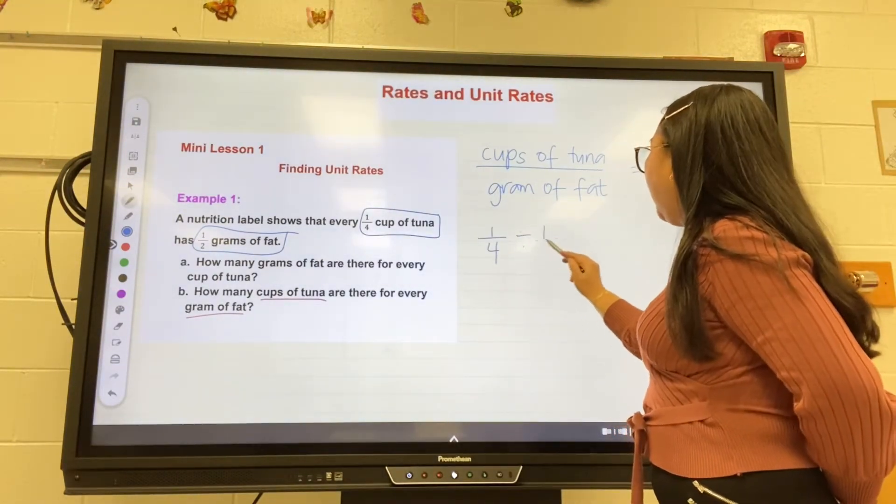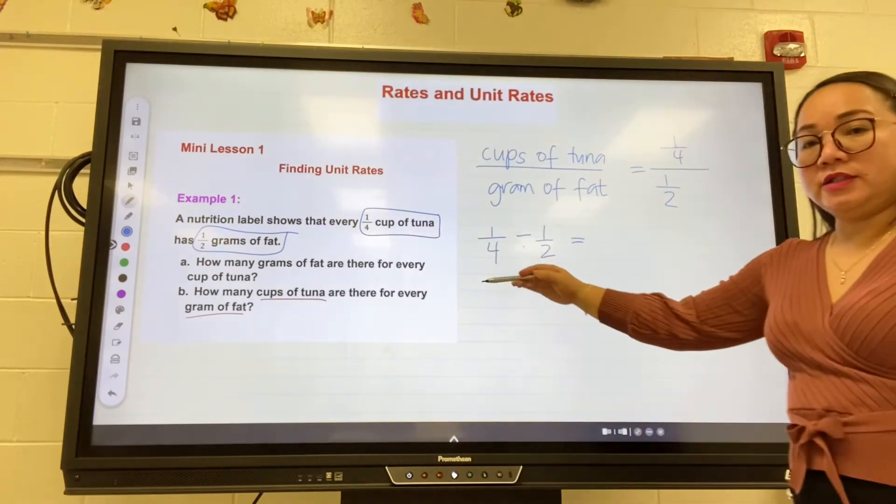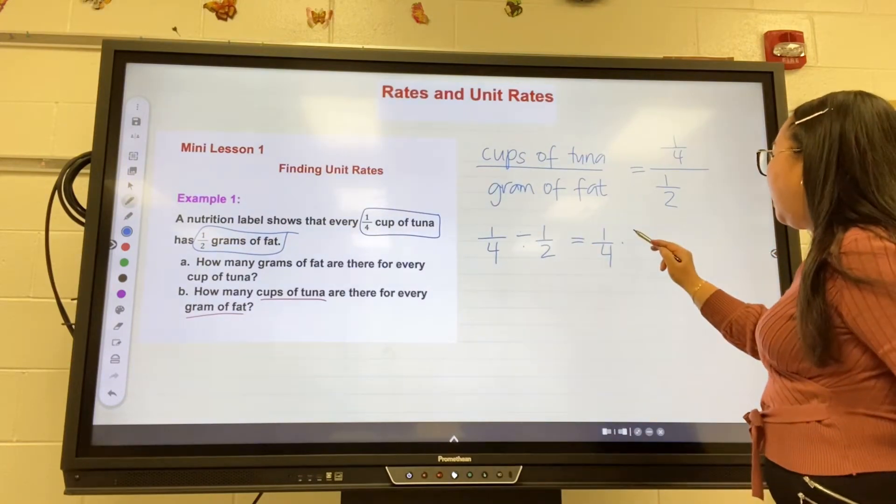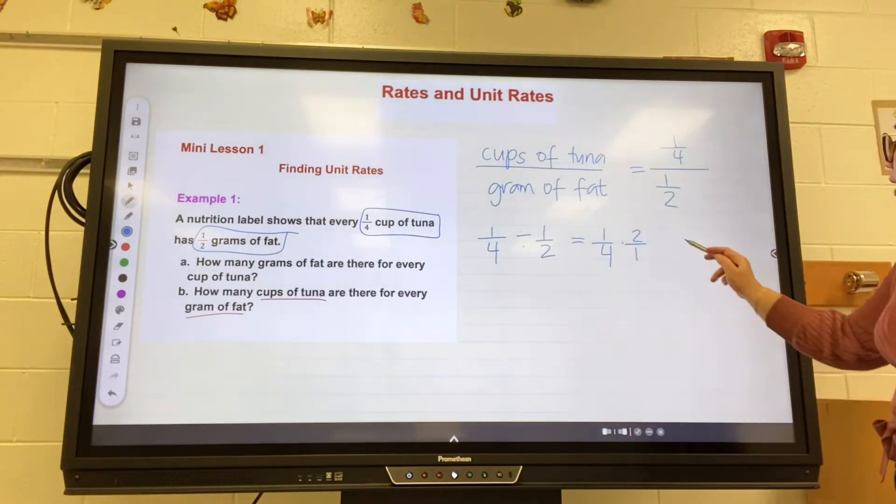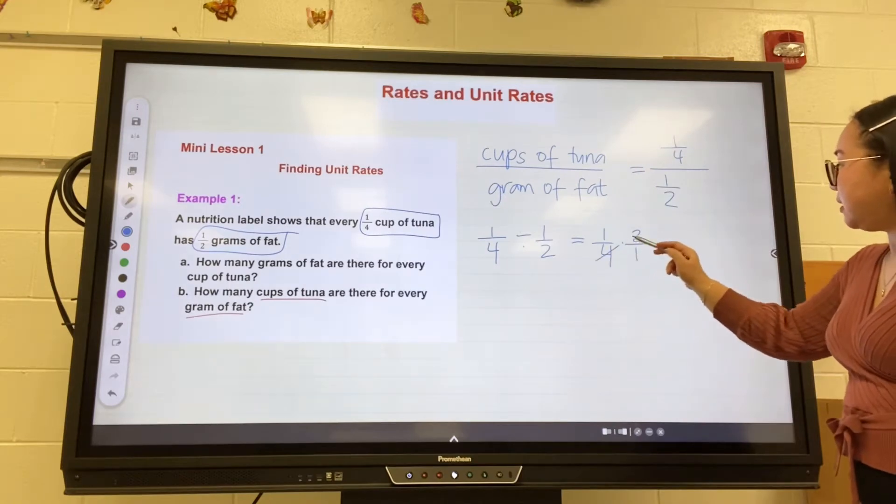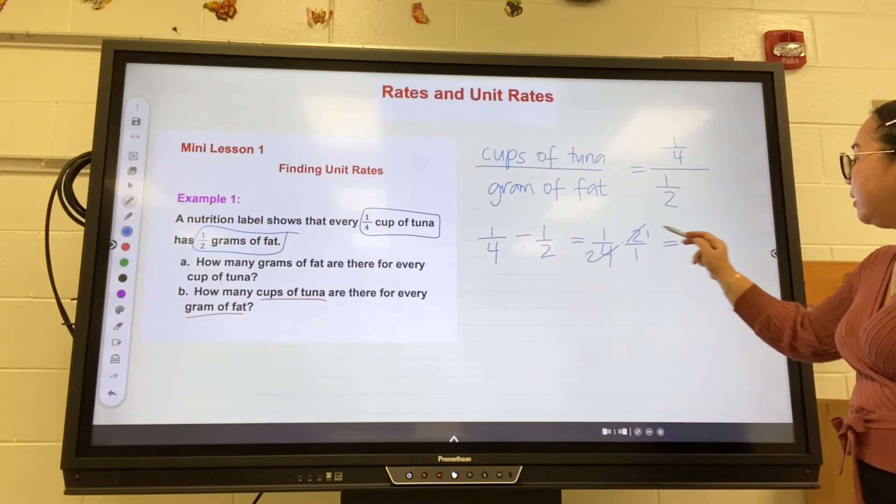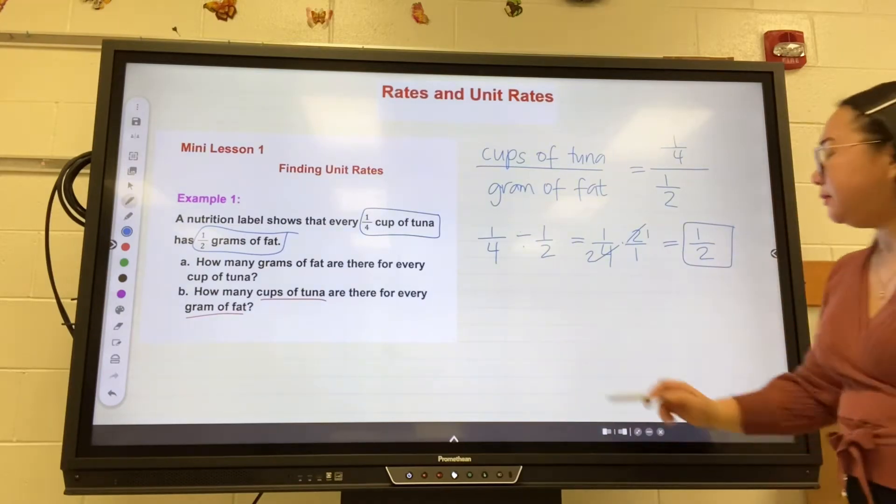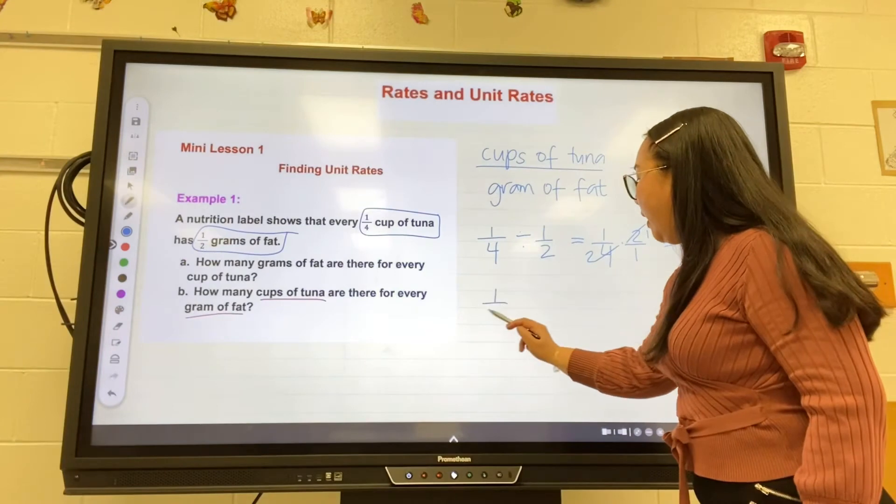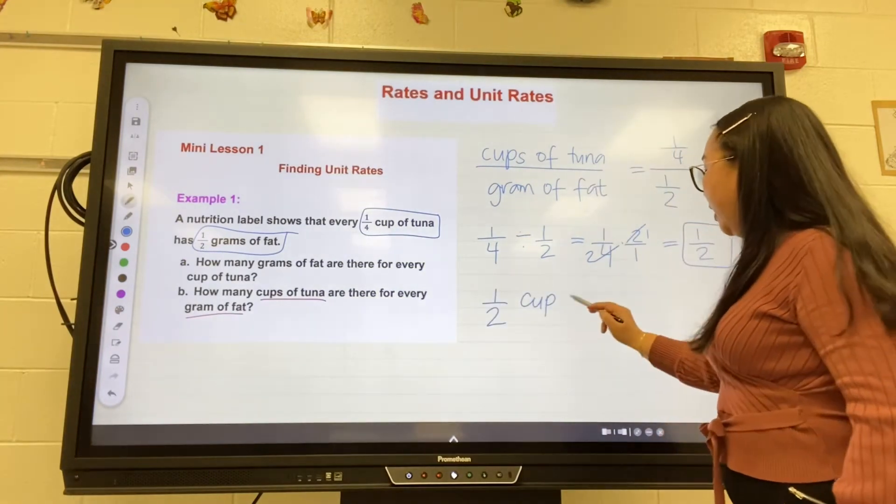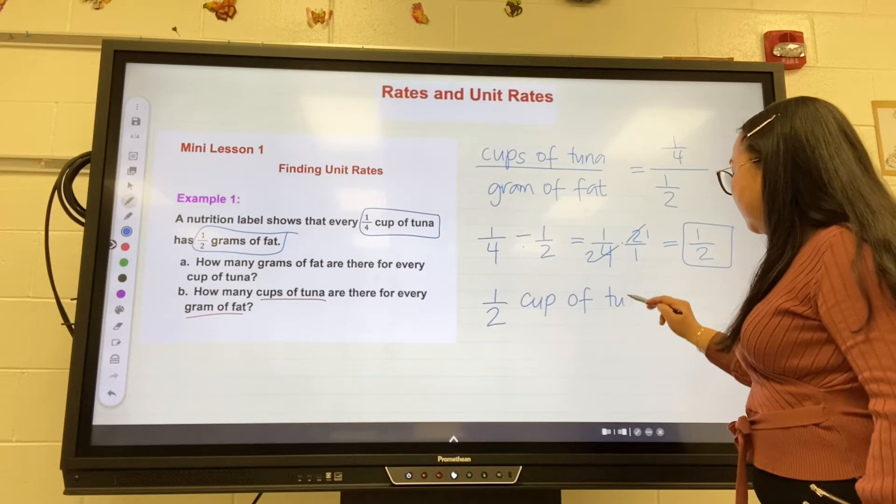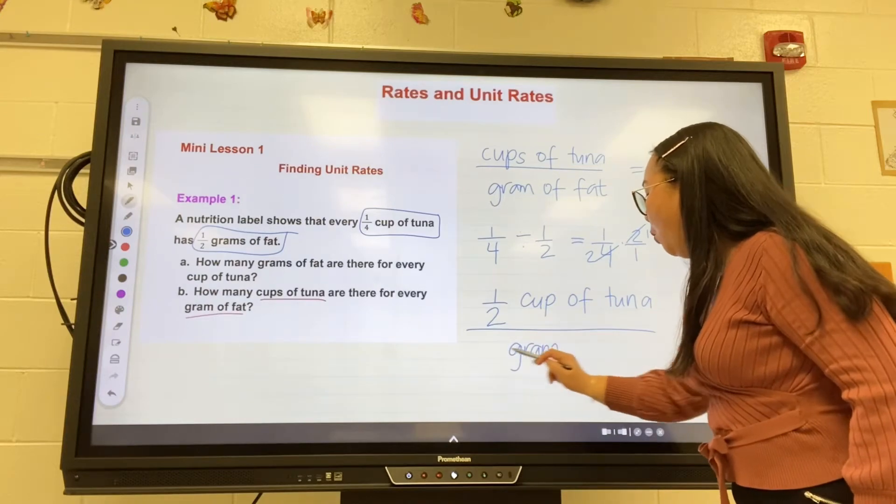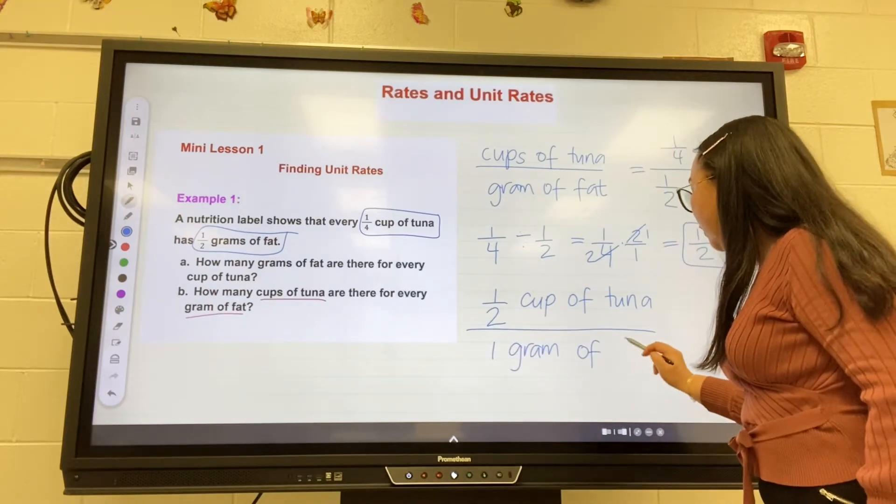For every one-half grams of fat, we can rewrite this as one-fourth divided by one-half. Keep, change, flip - the first fraction changes to multiplication, and the reciprocal of one-half is two over one. We can cancel this out: one times one is one, two times one is two, which is one-half. This means there is one-half cup of tuna for every one gram of fat.